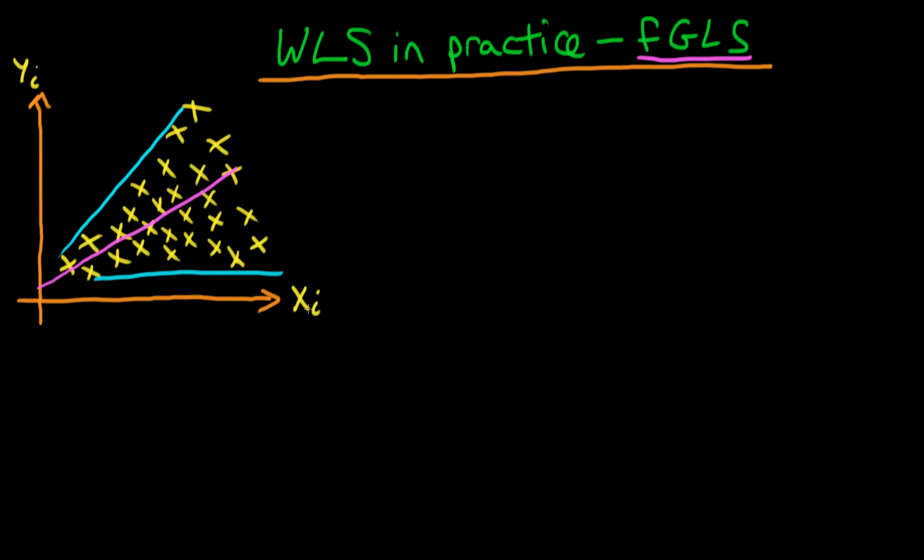We spoke about how we could actually use an explicit form of the variance if we knew it, which was equal to sigma squared times xi. We used this particular variance in order to generate weights which we then used to transform our model to a system whereby we could use OLS on that transformed system and we would have homoscedastic errors.